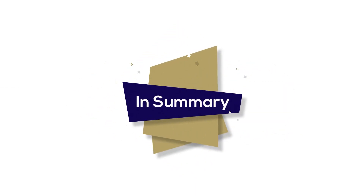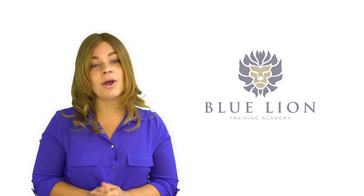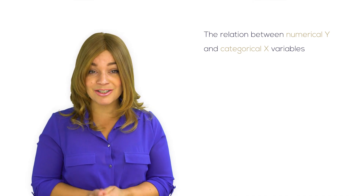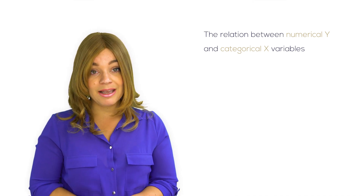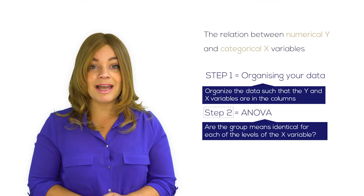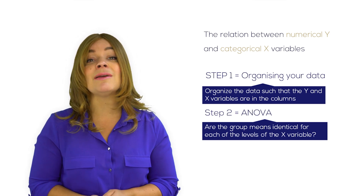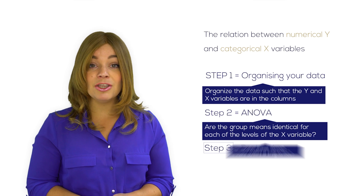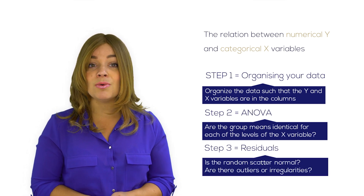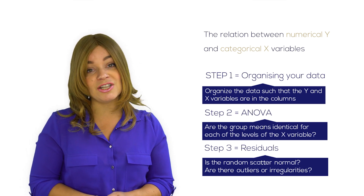In summary, in this series of videos I have explained that the ANOVA is a technique to test whether a categorical influence factor X has a significant effect on a numerical Y. After organising your data in the first step, you run the analysis in the second step and interpret the p-value for significance and the R-squared for importance. In the third step, you will validate your conclusions by checking whether the residuals are normally distributed and whether they contain any outliers or other strange patterns.